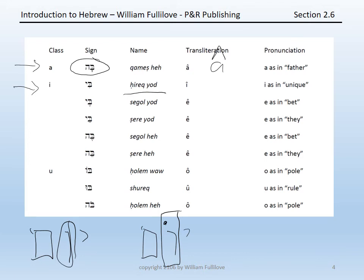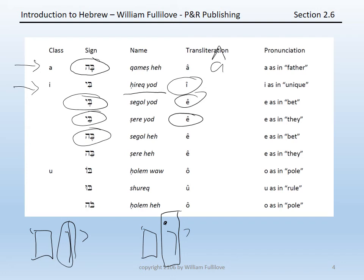A hireq-yod is a long 'i' sound, as in 'unique.' A segol-yod is a short 'e' sound, as in 'bet.' A tsere-yod is a long 'e' sound, as in 'they.' A segol-hey is also a short 'e' sound, as in 'bet.' And a tsere-hey is the long 'e' sound again, as in 'they.'